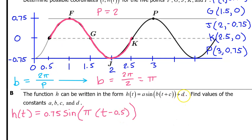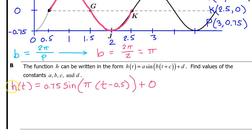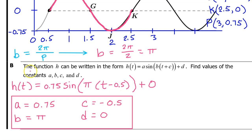The d value always corresponds to the midline. In this case the midline is 0, so d equals 0 — we don't even need to write it when listing a, b, c, and d. On the AP exam, you're allowed to leave your answer as the full equation or list the values of a, b, c, and d separately.